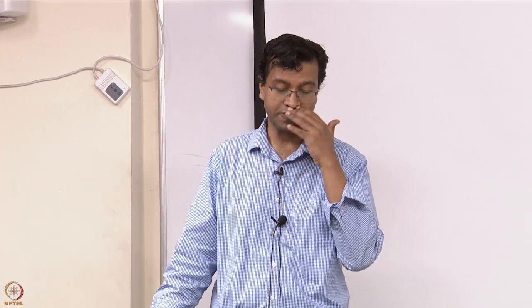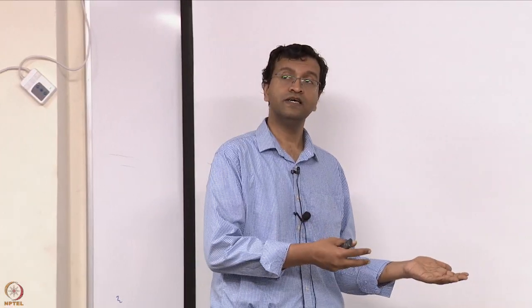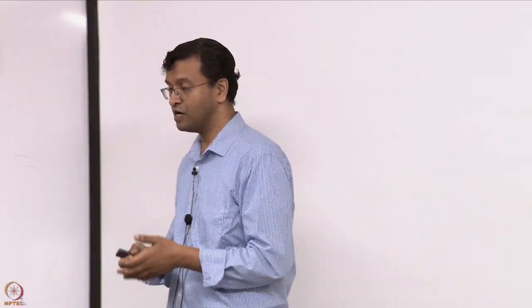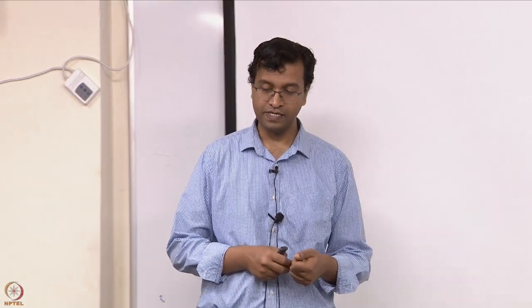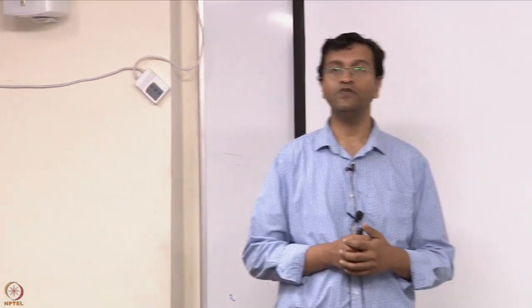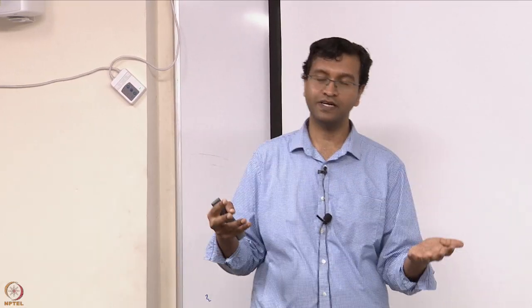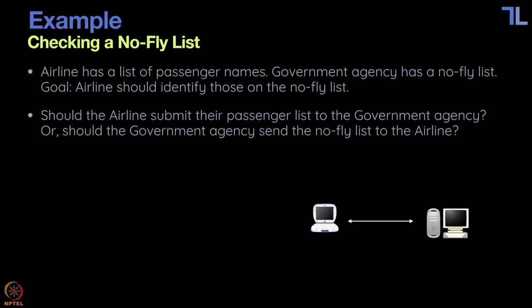The other option would be the government sends the no-fly list to all the airlines. But that's something the government wouldn't want to do, because it's very sensitive information. So we have a deadlock — either one of them has to sacrifice their privacy. The utility is that you want to prevent someone on the no-fly list from flying, but both options come with their compromises.